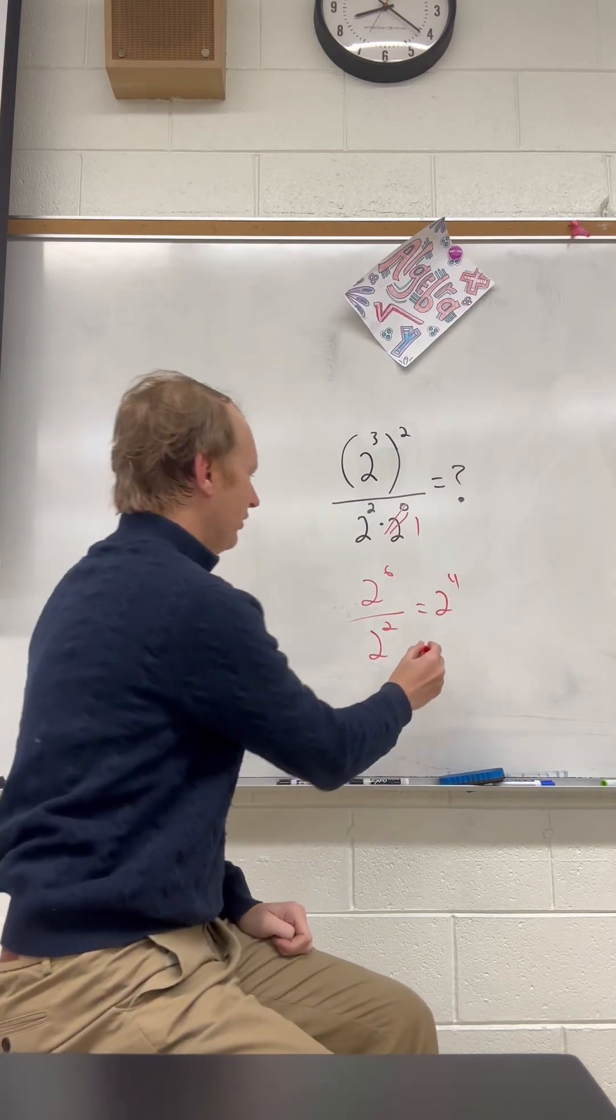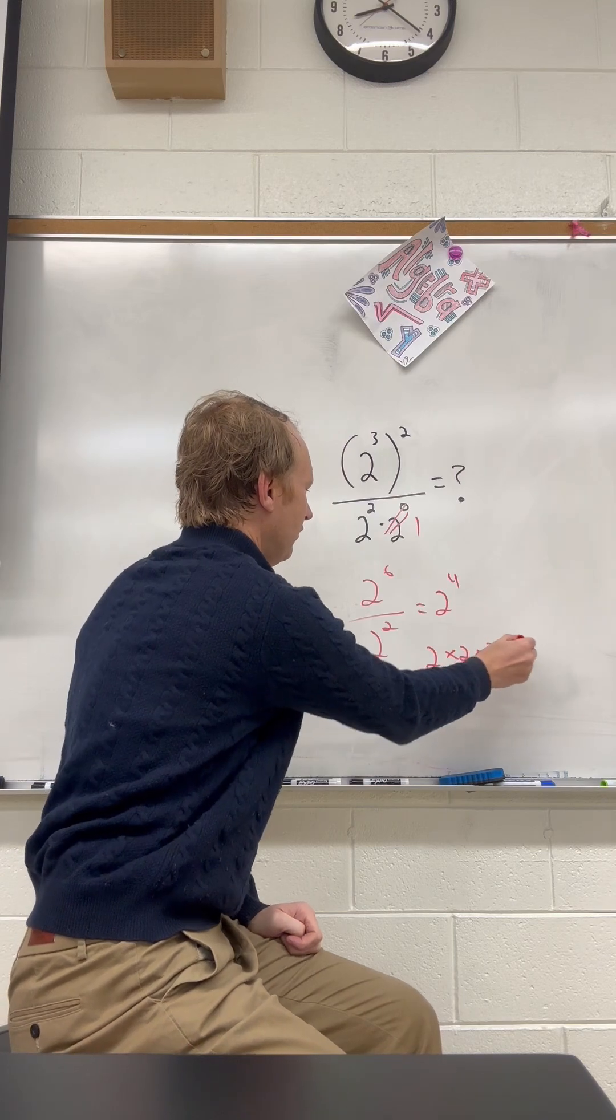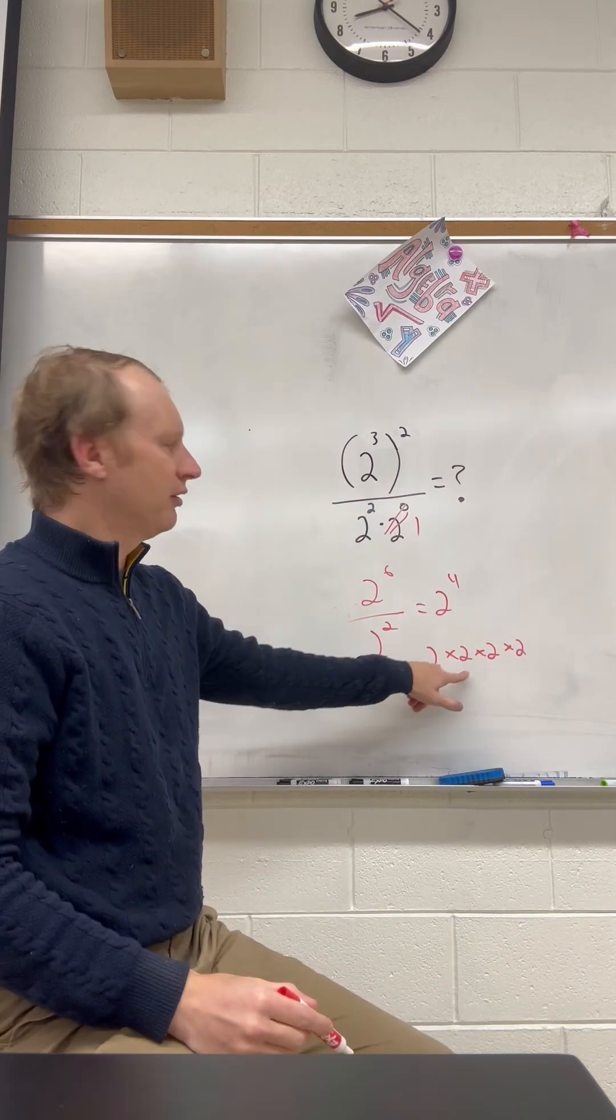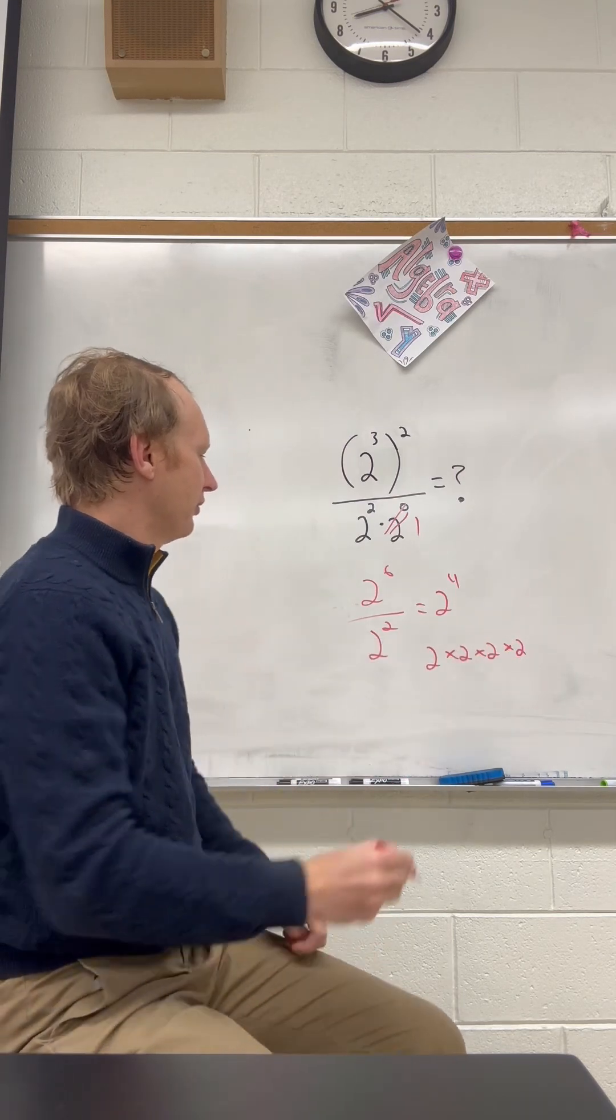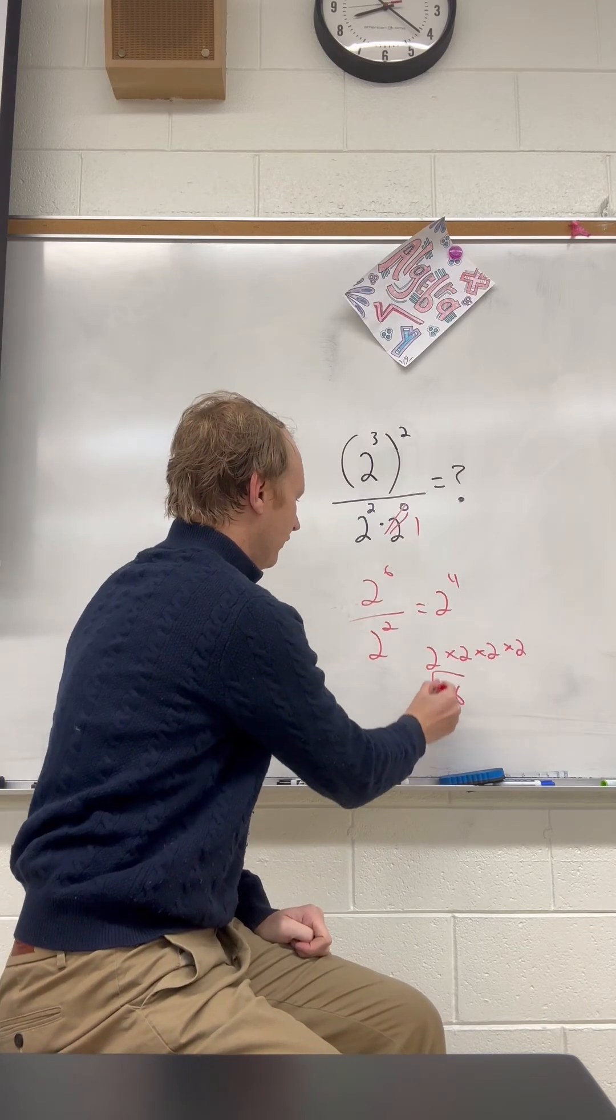2 to the 4th power is the same as 2 times 2 times 2 times 2. So 2 times 2 is 4, times 2 is 8, times 2 is 16. The answer comes out to be 16.